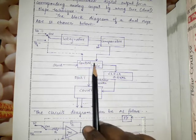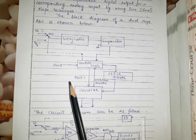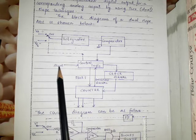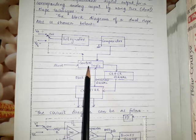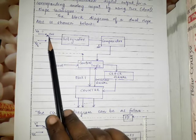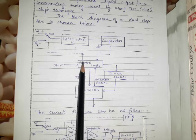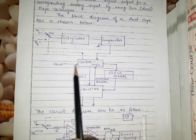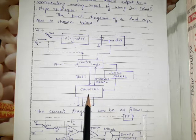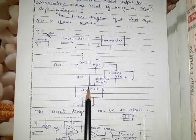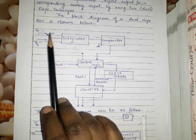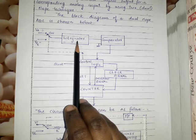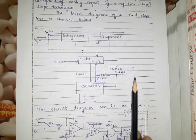Let us see the working of the dual slope ADC. First, we look at the control logic, which provides all controls to the different circuits. We apply a start signal to the control logic. When the start signal is given, the control logic connects the switch to VA. The start signal also resets the counter, so initially the counter value is zero. The voltage at VA begins driving the integrator.